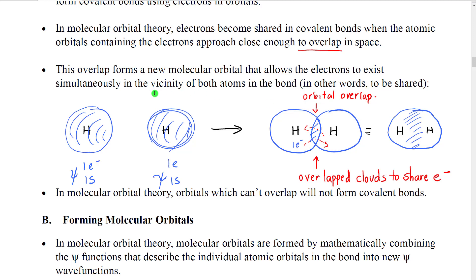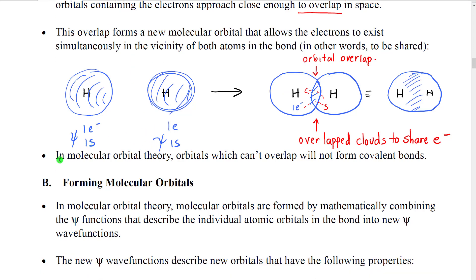In the molecular orbital theory, we first define orbitals, have those orbitals describe specific electrons, bring those orbitals together in space in their x, y, z coordinates, overlap them, and then calculate a new molecular orbital function. One important part of this is that in the molecular orbital theory, orbitals which can't overlap won't form covalent bonds.